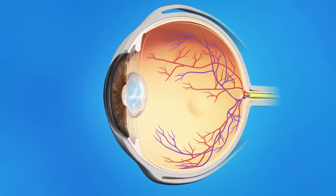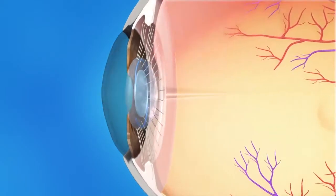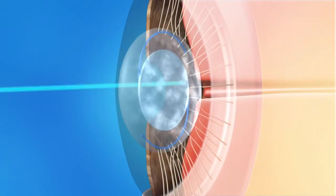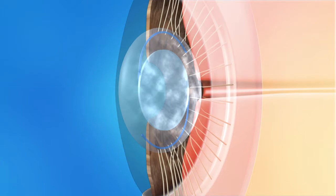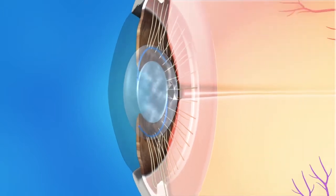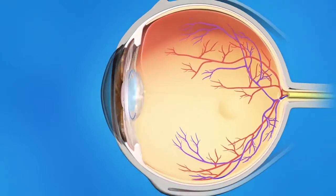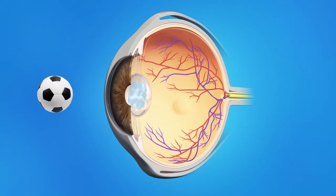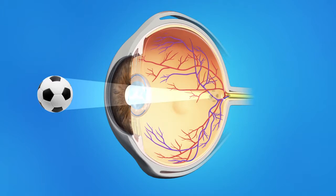Your doctor will dilate or widen your pupils with dilating eye drops, and may also put numbing drops in your eye. With YAG laser capsulotomy, your ophthalmologist will use a laser to create an opening in the back of your eye's cloudy lens capsule. Light can then pass through the lens and focus properly on the retina, allowing you to see clearly again.